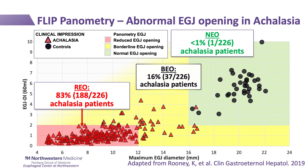To address achalasia — the most important esophageal motor disorder, whose identification is of utmost importance — we evaluated EGJ opening among a large cohort of more than 200 achalasia patients, including subtypes 1, 2, and 3 defined by high-resolution manometry. The vast majority of patients with achalasia had reduced EGJ opening on FLIP planometry, while about a sixth had borderline EGJ opening and may require additional testing to confirm the diagnosis.